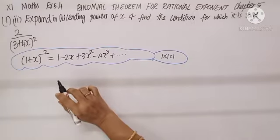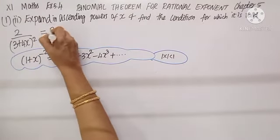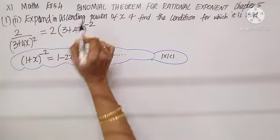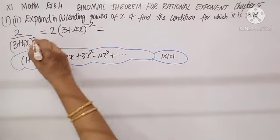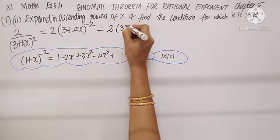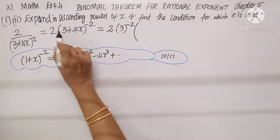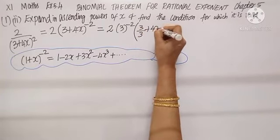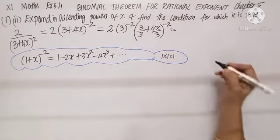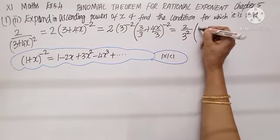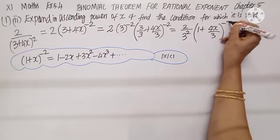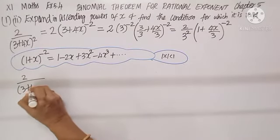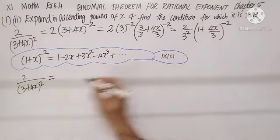Second subdivision: 2/(3+4x)². Keep 2 as it is. (3+4x) goes to the numerator as (3+4x)^(-2). Again take 3 out, so it will be 2 times 3^(-2). Whenever I take a number out, it goes with the power, so every term divide by 3. I get (3/3 + 4x/3)^(-2), or it is 2/3² times (1 + 4x/3)^(-2).